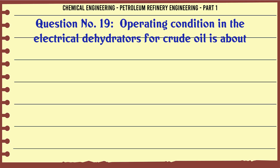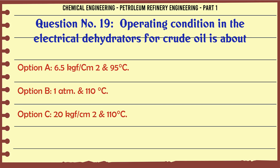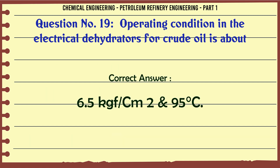Operating condition in the electrical dehydrators for crude oil is about: A. 6.5 kgf/cm² and 95°C, B. 1 atm and 110°C, C. 20 kgf/cm² and 110°C, D. 50 atm and 150°C. The correct answer is 6.5 kgf/cm² and 95°C.